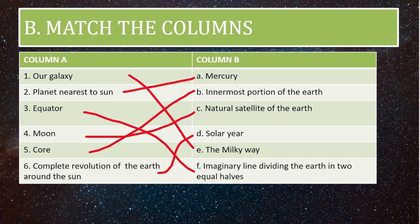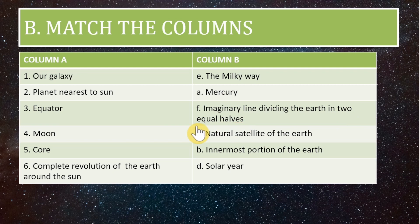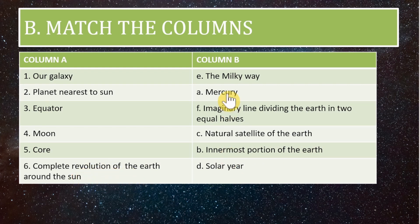Let us verify our answers: our galaxy — Milky Way; planet nearest to the sun — Mercury; equator — imaginary line dividing the earth into equal halves; moon — natural satellite of the earth; core — innermost portion of the earth; complete revolution of the earth around the sun — solar year. We were correct.